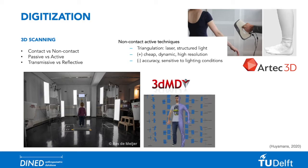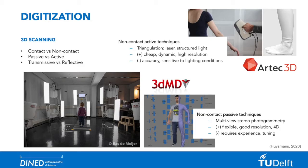A human subject needs to stand completely still throughout the scanning process. The other scanning method is the 3D-MD full body scanner. This installation captures a human subject from a 360-degree viewpoint using stereophotogrammetry. A human subject can be captured from many postures rather quickly and even has the ability for 4D scanning, capturing different frames over a length of time. The disadvantage of this technique is the need for experience and tuning.